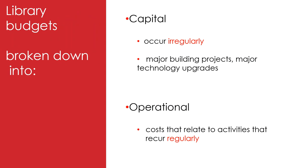Typically, library budgets are broken down into two categories. The first of these is capital. Capital costs are those that occur irregularly, things like major building projects or major technology upgrades. In schools, this part of the library budget may not be allocated to the teacher-librarian.